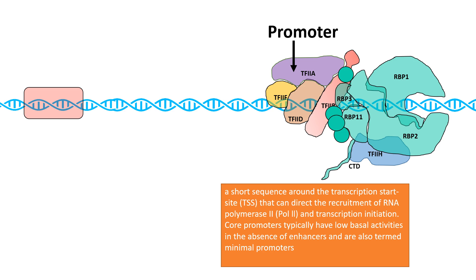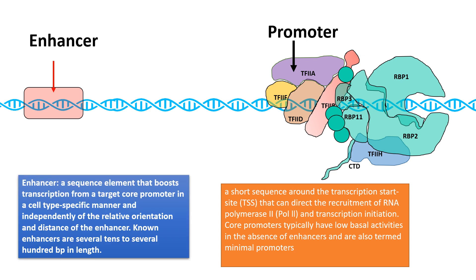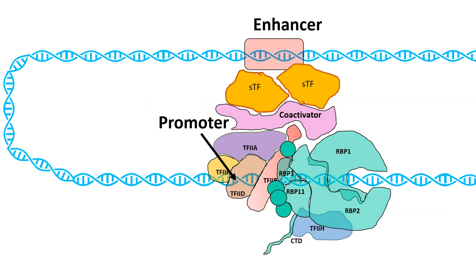Apart from interactions at the promoter, the elongation rate can be regulated by other transcription factors binding at distant locations. There are sequences known as enhancers, which may be located several thousand base pairs upstream or downstream. These enhancers bind to specialized transcription factors and, through a DNA looping mechanism, interact with coactivators that bridge interactions with the core promoter elements, thereby increasing the rate of transcription or the fidelity with which RNA polymerase escapes the promoter and runs along the gene to transcribe it.